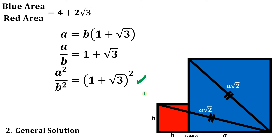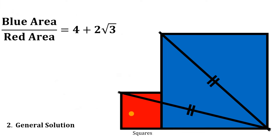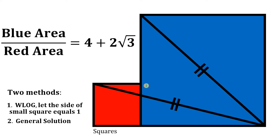This is familiar to us. Expanding (one plus square root of three) squared equals four plus two times square root of three. Therefore, given this figure, using both methods, the ratio of the blue area to the red area equals four plus two times square root of three. And as always, we are done.